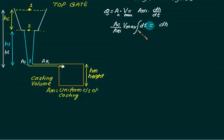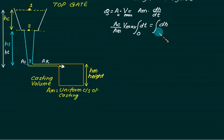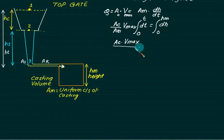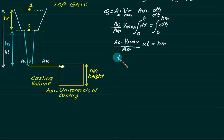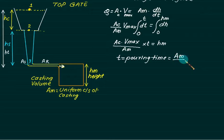All these values are constant, so we will integrate. When time equals 0, initial level HM is also 0. At any time t, we have to fill this equals to HM. So we can solve this: AC × V_max / AM × t = HM. The pouring time equals cross-sectional area of mould divided by cross-sectional area of choke, divided by V_max, multiplied by HM.